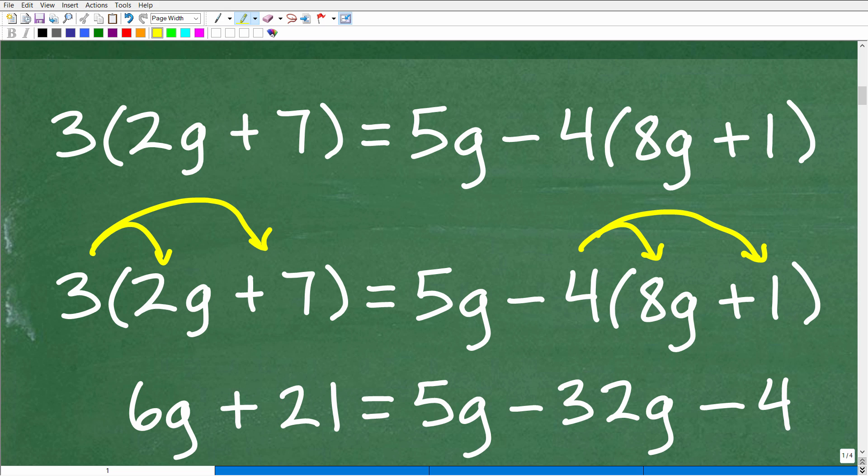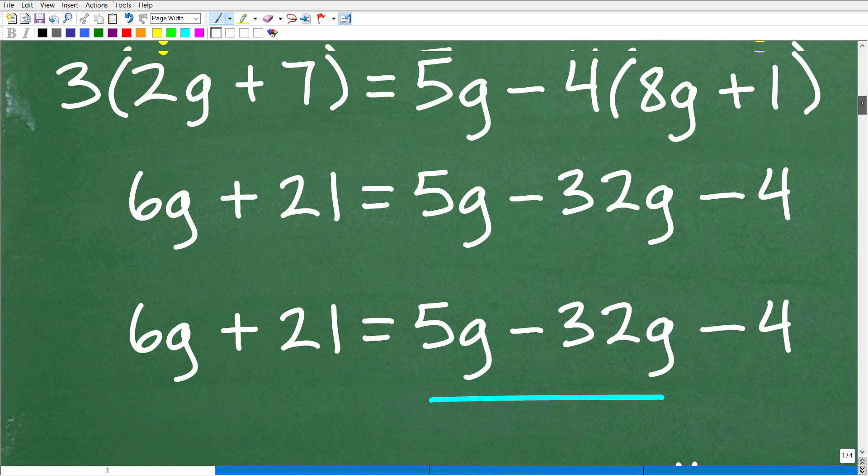So before we start moving things around from one side of the equation to the other, notice that I have a number outside of parentheses like this. In this case, this is a negative 4. Anytime you see parentheses in an algebra equation, this is an indication that you're going to have to apply the distributive property. When you have parentheses around a sum or difference, anything where there's addition or subtraction going on, that is going to be the first thing you want to address in this equation. We need to apply the distributive property. That's step number one. So let's go ahead and do that right now.